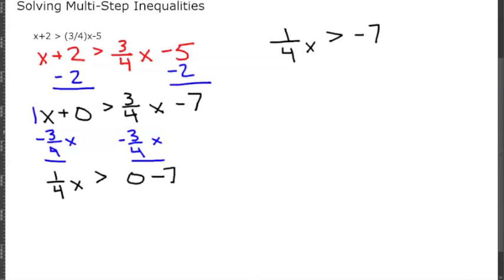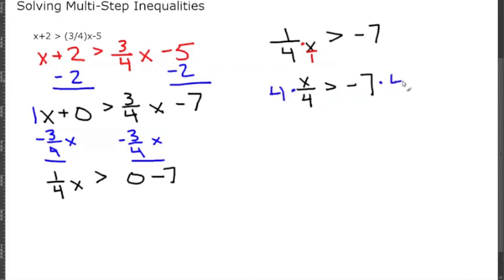Our last step is to get rid of the fraction. (1/4)X can be written as X divided by 4. To isolate X, we multiply both sides by 4 — the 4s cancel — leaving us with X is greater than negative 7 times 4, which is negative 28. That's our answer for the first example.